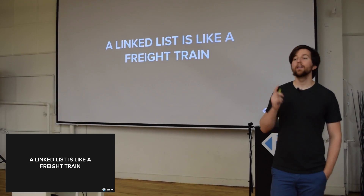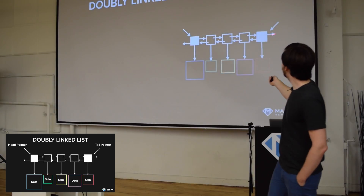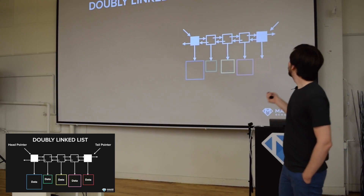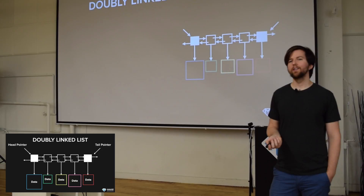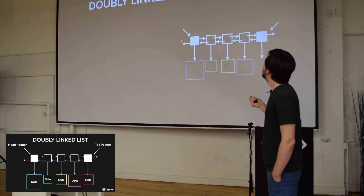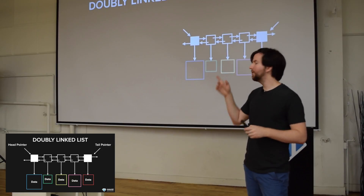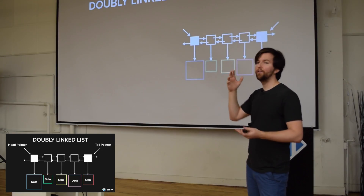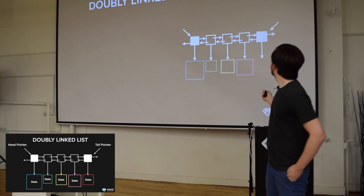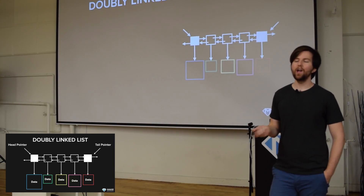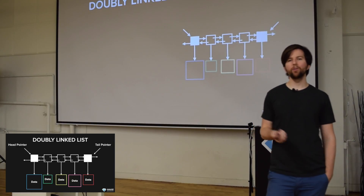Does the last element have a pointer to nothing? Yes — these pointers must have the value None so that when you're iterating through, you know when you've reached the end. The typical pattern is: assign node to head, then while node is not None, check the data; if it's not what you want, follow the next pointer by reassigning node = node.next. You know you've reached the end when node equals None — when it's not pointing to anything.